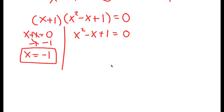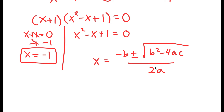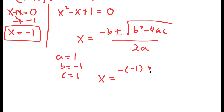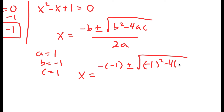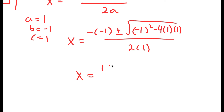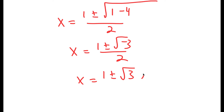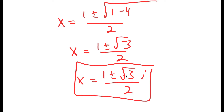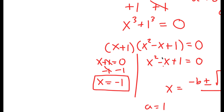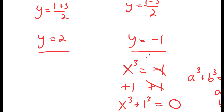For x squared minus x plus 1 equals 0, I again use the quadratic formula. With a equals 1, b equals negative 1, and c equals 1, I get x equals 1 plus or minus the square root of 1 minus 4, all over 2, which gives x equals 1 plus or minus the square root of negative 3 over 2. The square root of negative 3 can be rewritten as i times the square root of 3, so these are two imaginary solutions — not real solutions.